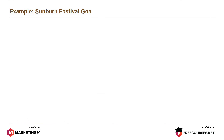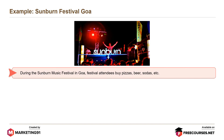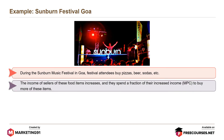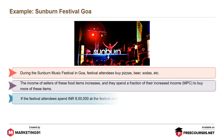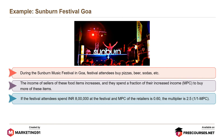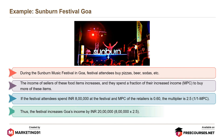Let's look at an example of how the multiplier works in a real-world setting. During the Sunburn Music Festival in Goa, festival attendees buy pizzas, beer, sodas, etc. The income of sellers of those food items increases, and they spend a fraction of their increased income, which is their MPC, to buy more of these food items. If the festival attendees spend Rs. 8 lakh at the festival, and the MPC of the retailers is 0.60, then the multiplier is 2.5, i.e., 1 divided by 1 minus MPC. Thus, the festival increases Goa's income by 8 lakh into 2.5, which equals Rs. 20 lakh.